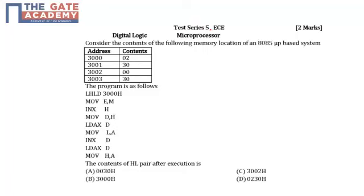Hello students, the following question is from Test Series 5, subject Digital Logic, chapter Microprocessor, and the question is asked for 2 marks. Consider the contents of the following memory locations of an 8085 microprocessor-based system. These are the contents of the addresses given, and according to this program, we are supposed to find the contents of the HL pair after execution of this code.